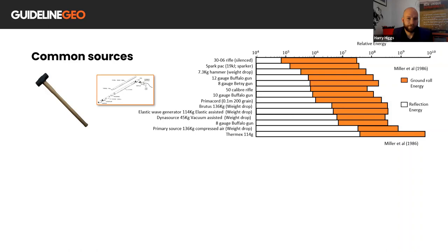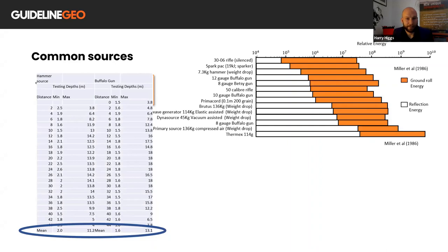Here's just a quick comparison I made between some data I collected using both a hammer and a Buffalo gun in clay ground. As you can see from the testing depths the Buffalo gun performed slightly better in both the minimum and maximum test depths. But it also took over three times as long to collect the data and it required two operators for the Buffalo gun compared to just one for the hammer.